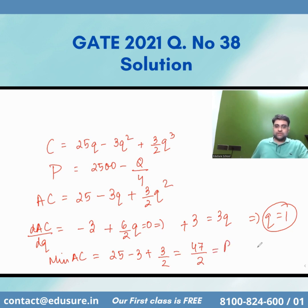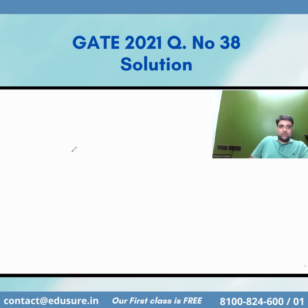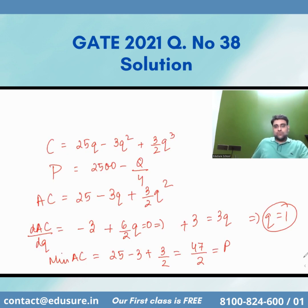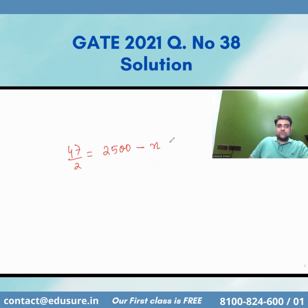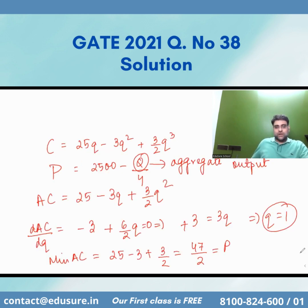So the price is equal to 47/2. Setting this equal to the demand function: 47/2 = 2500 minus Q/4, where Q is the aggregate output. I should consider Q = number of firms (n) multiplied by the quantity per firm (q = 1), divided by 4.